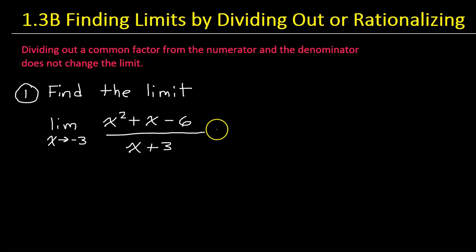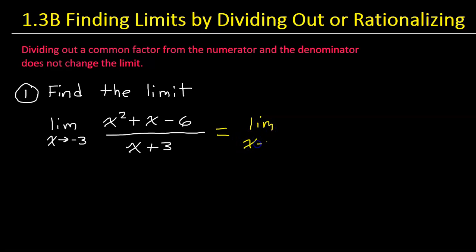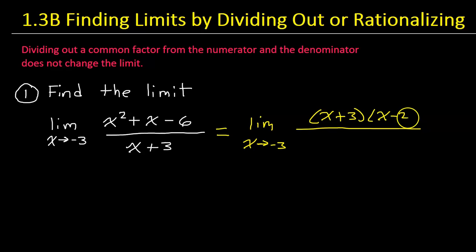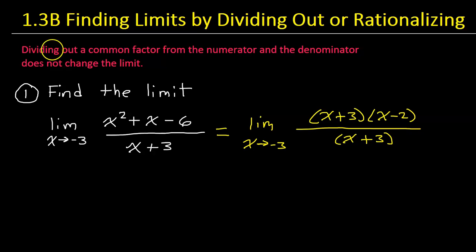On the other hand, that indeterminate form does tell us that there might be a common factor between the numerator and denominator. So let's factor the numerator. This limit will equal the limit as x approaches negative 3 of the factored form: x plus 3 times x minus 2, over x plus 3. Sure enough, we notice a common factor in the numerator and the denominator. You can divide out a common factor from the numerator and denominator without changing the limit, so if we cancel the x plus 3's, the limit will not change.